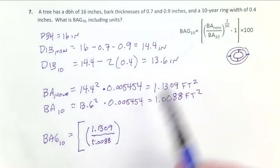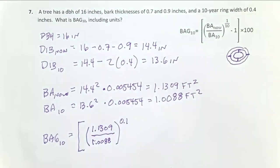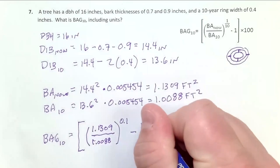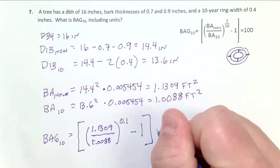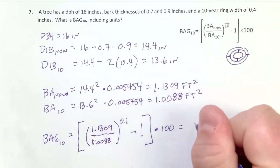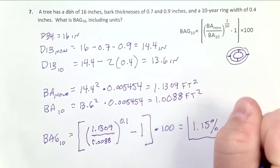Now I raise it to the one-tenth power. In a calculator, that's going to be easier to do as 0.1. So I raise this number to the 0.1 power. And then once I have that number, I subtract 1 from it. I multiply that by 100. That's my final step. And this equals 1.15%, which is our final answer.